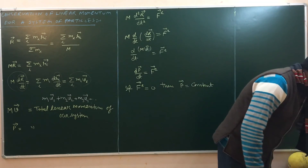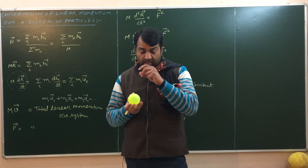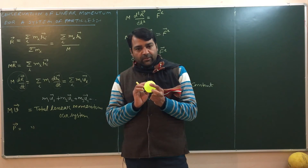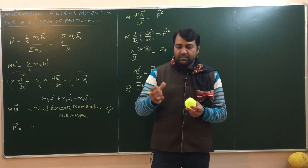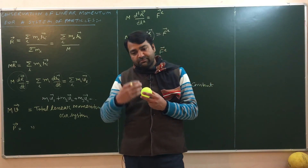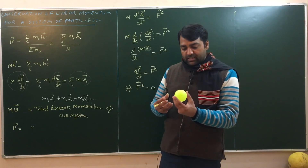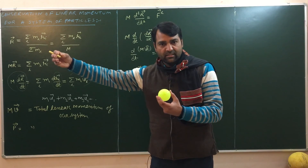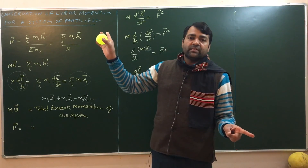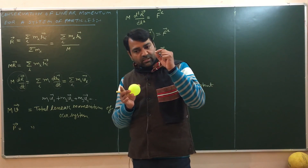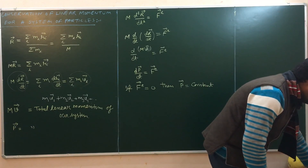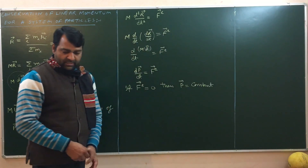Consider yesterday's example of an exploding shell. A shell is moving and it explodes due to purely internal forces — there is no external role in the explosion. After the explosion it turns into many fragments moving in different directions. But the centre of mass will remain at the same point. The fragments move in such a way that if one particle moves in one direction with certain momentum, there must be equal and opposite momentum in the other direction, so their net momentum is zero — because the centre of mass is located at the same point before and after the explosion. That was our conservation of linear momentum for a system of particles.